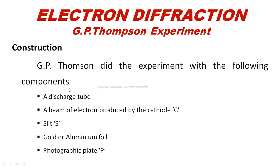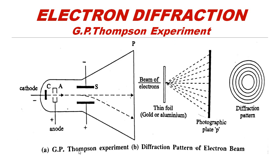In G.P. Thomson's experiment, the apparatus consists of a discharge tube with a beam of electrons, a thin gold and aluminum foil, and a photographic plate. A cathode tube produces a beam of electrons. High potential energy of 50,000 volts accelerates the electrons. The fine pencil beam of electrons strikes the thin gold or aluminum foil.